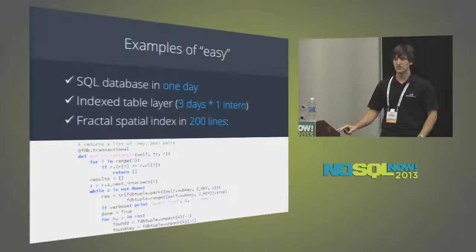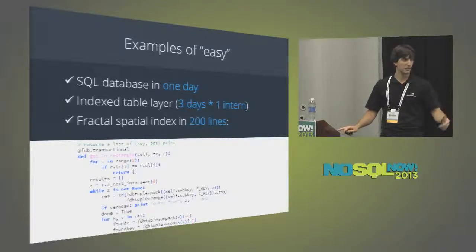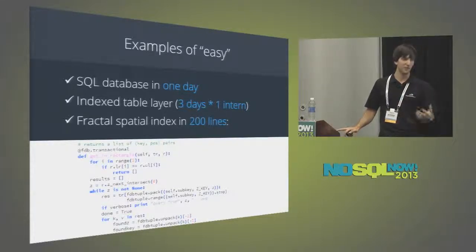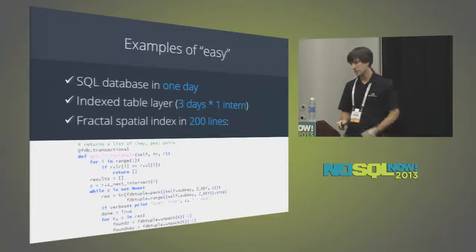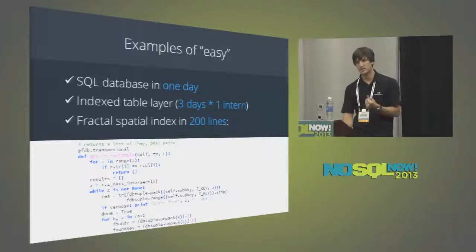Another example: a fractal spatial index in 200 lines of Python that again inherits the properties of scalability and fault tolerance. These are examples of how easy it is to build powerful things on top of a transactional foundation.